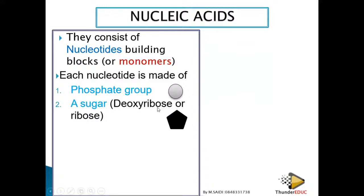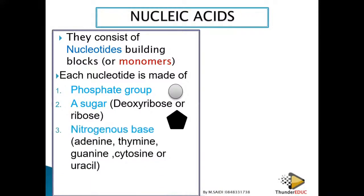Like glucose, maltose, and ribose, the '-ose' ending indicates a sugar. The type of pentose sugar is either deoxyribose or ribose. In the exam, if they ask you to name this sugar: if it's DNA, say deoxyribose; if it's RNA, say ribose. We'll see how to answer these questions when we get to the exam questions.